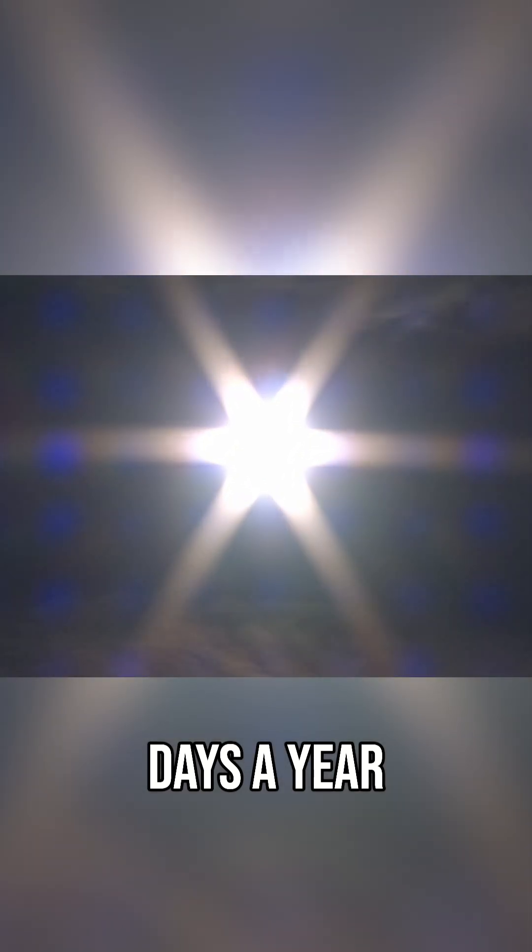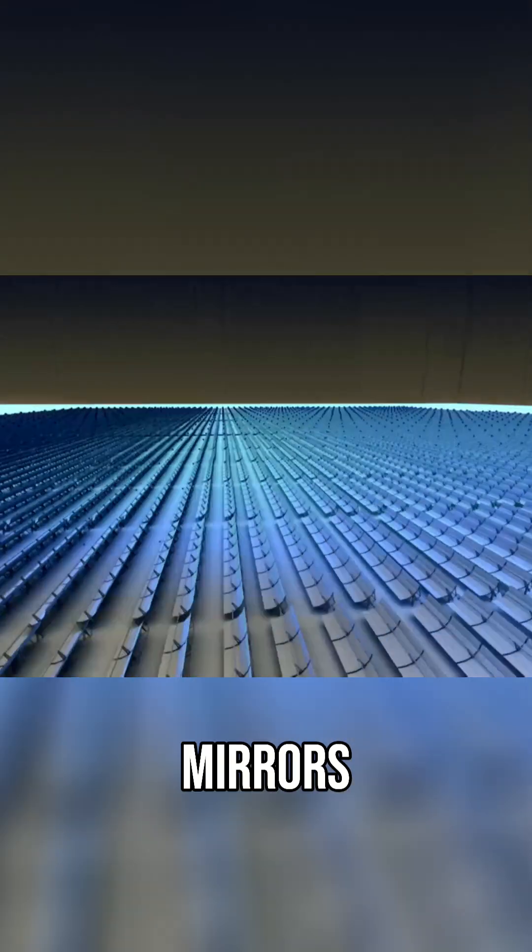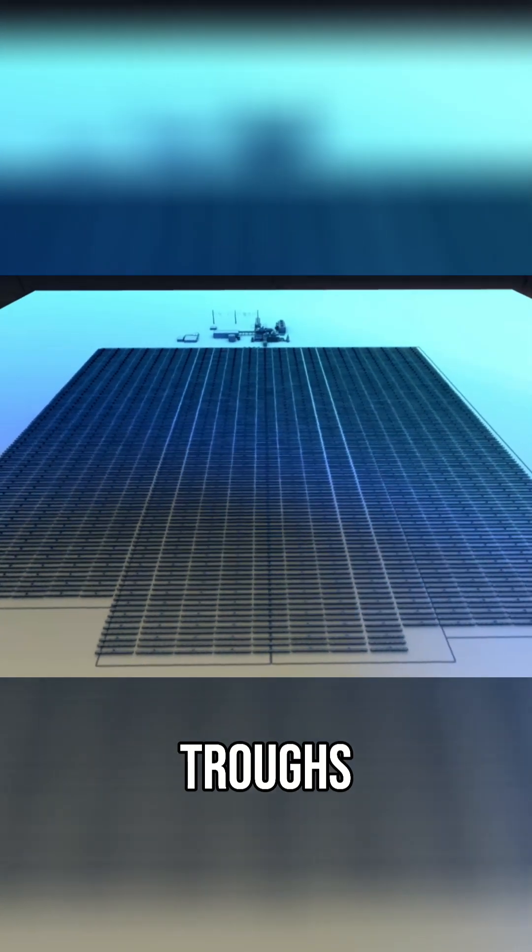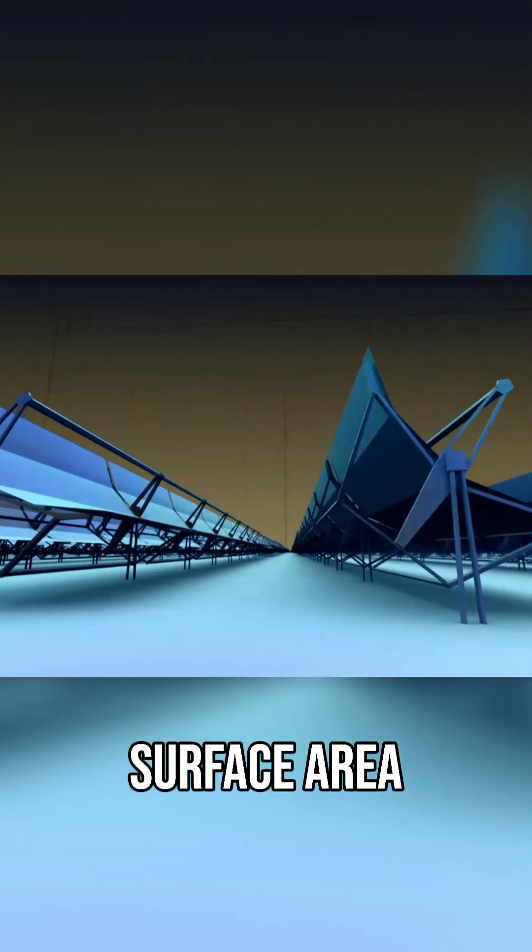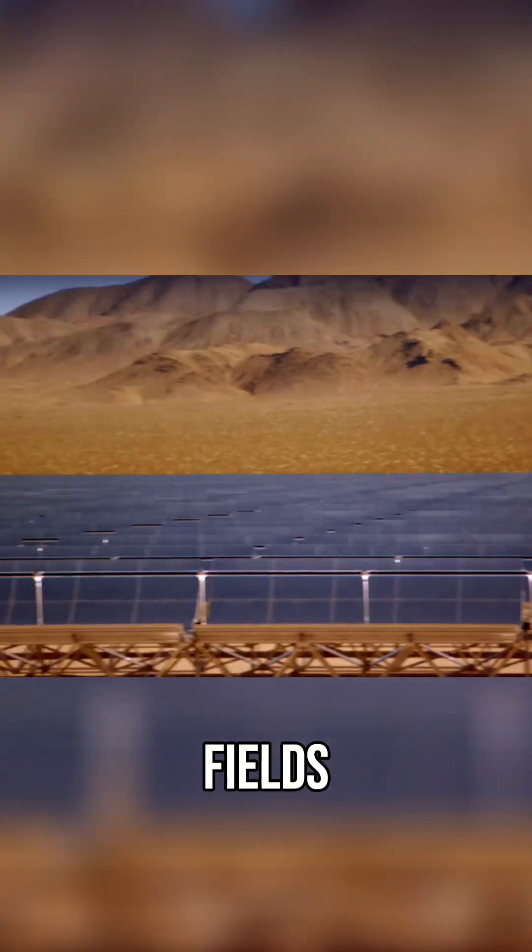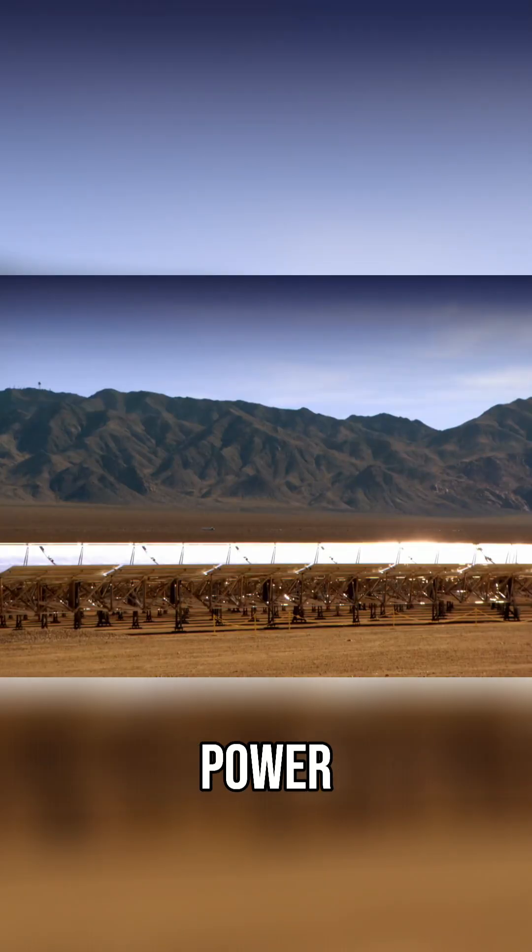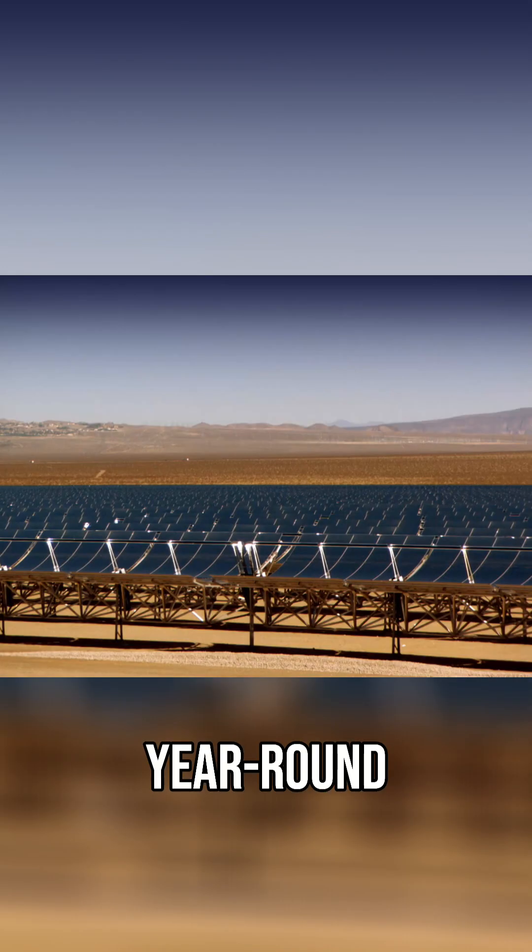In a desert where the sun shines 300 days a year, 200,000 mirrors side-by-side, row-on-row, form hundreds of parabolic troughs, reflecting sunlight with a surface area of about 50 football fields. That makes enough electricity to keep the power on in 14,000 homes year-round.